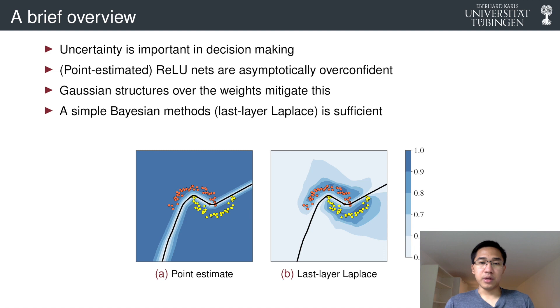But if we apply a last layer Laplace approximation on the same network, we achieve confidence close to 0.5 instead far away from the training data. So this gives us some illustration on what kind of result that we will have if we have a Gaussian approximation instead.